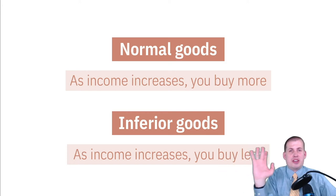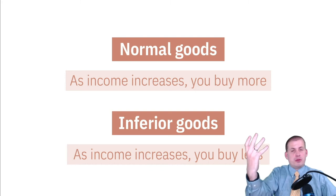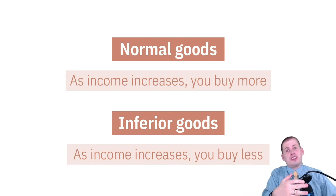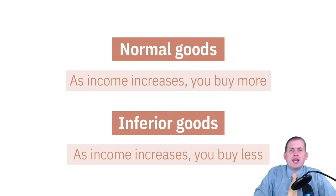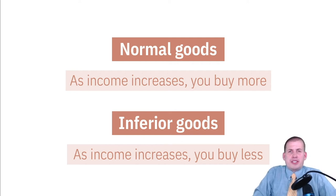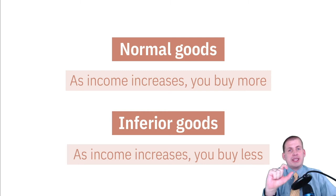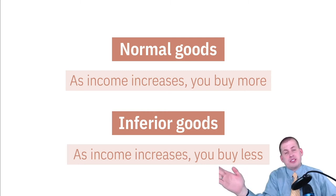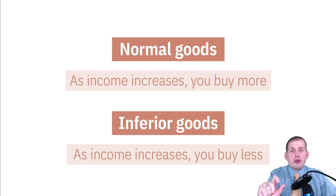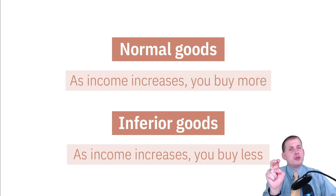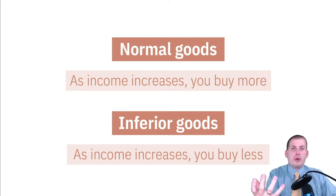For this class, we can generally assume we're talking about normal goods, where people will buy more of something if you lower the price and less of something if you raise the price. When we raise the price of a normal good, people will buy less; if we lower the price, people will buy more. But when they're buying more there are actually two reasons — two separate parts — to that increase.